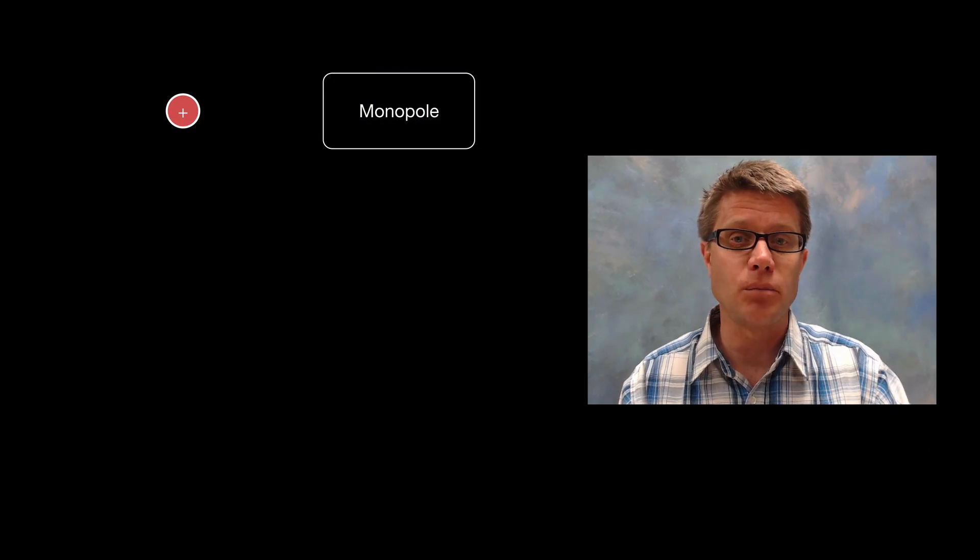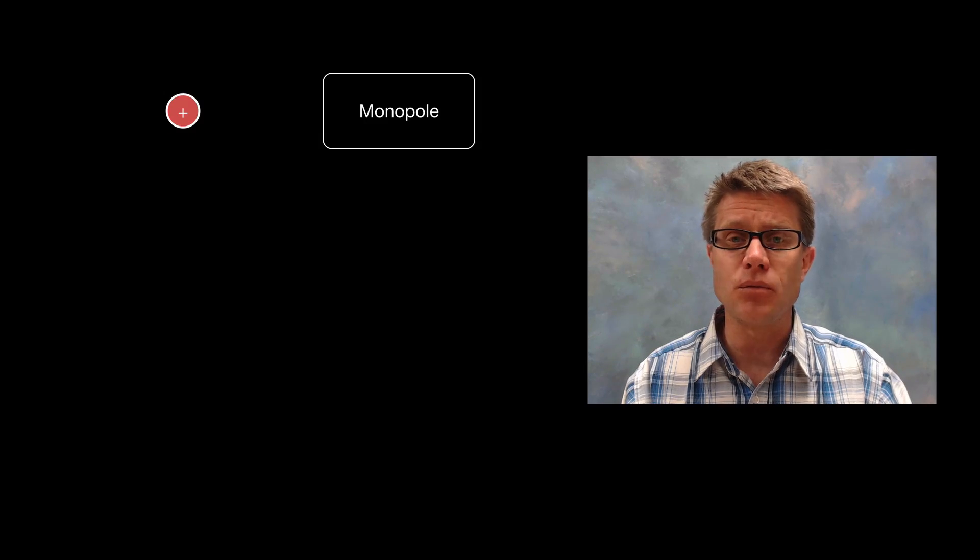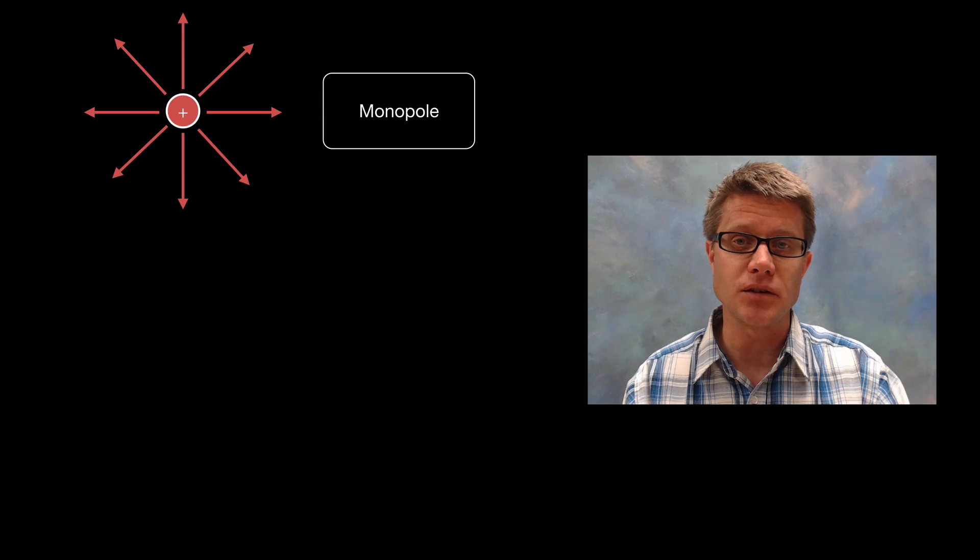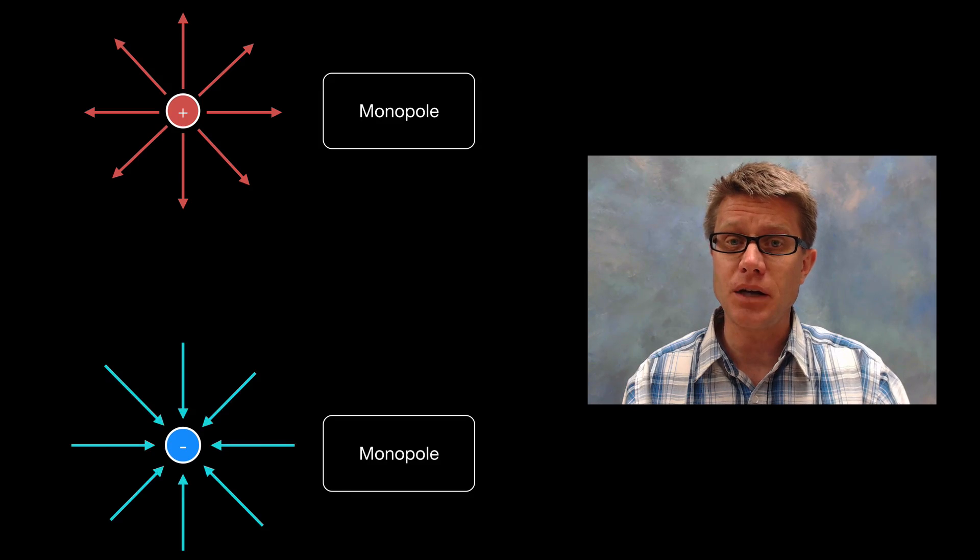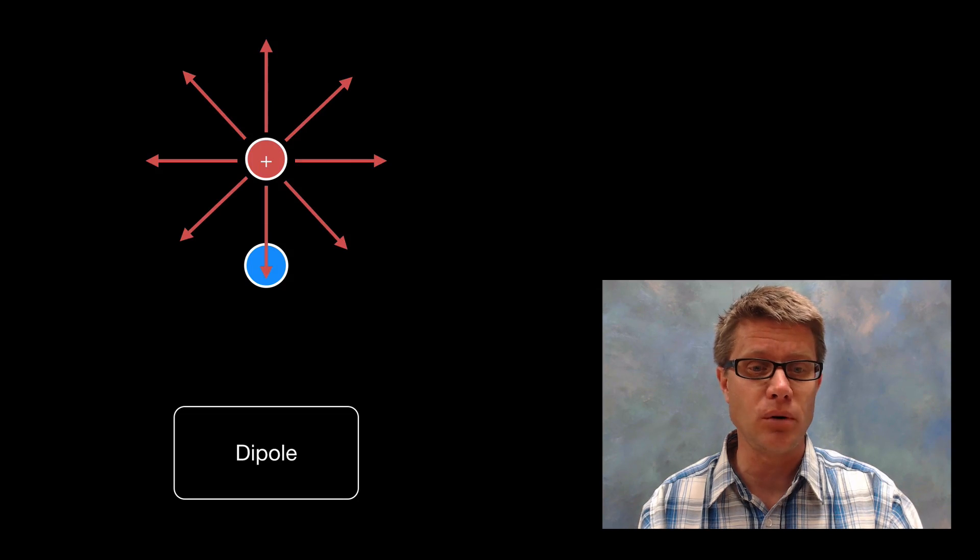So far we've talked about monopoles, where we have a point charge or a sphere and we can see that those electric field lines are going to go out from that since it's positive, or if it's negative they're going to come in. But we've only dealt with them separately. What happens if we bring those two charges right next to each other? We've now created a dipole.